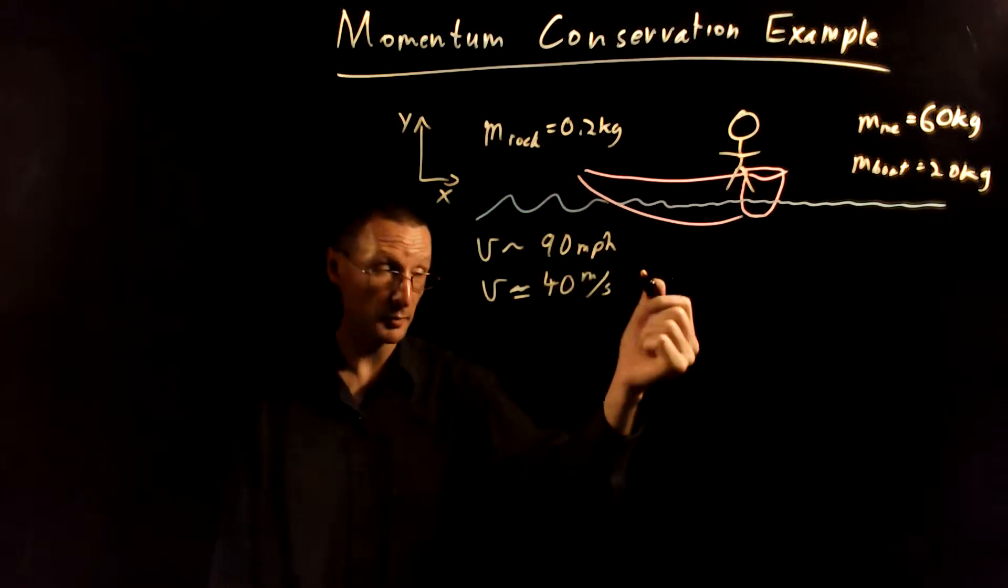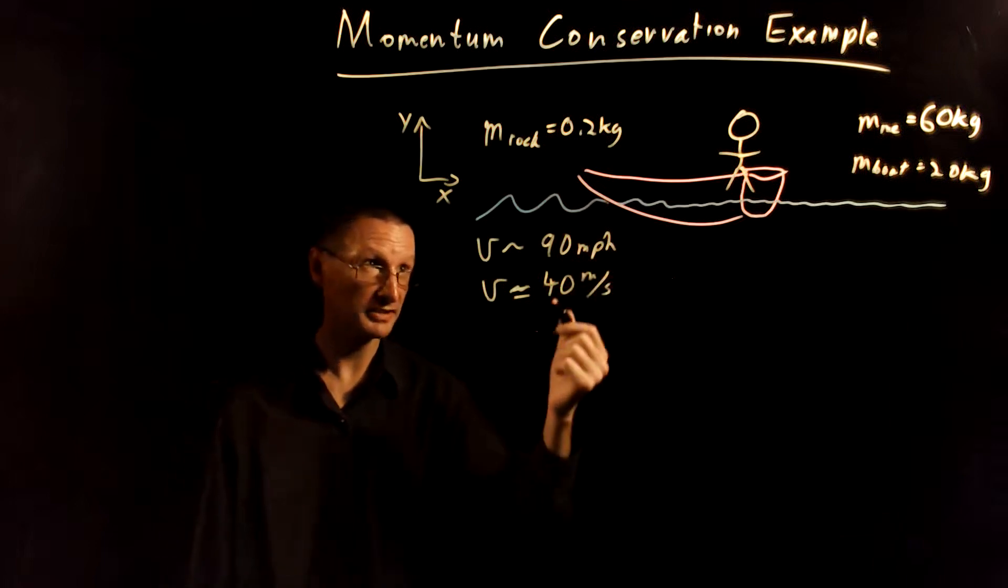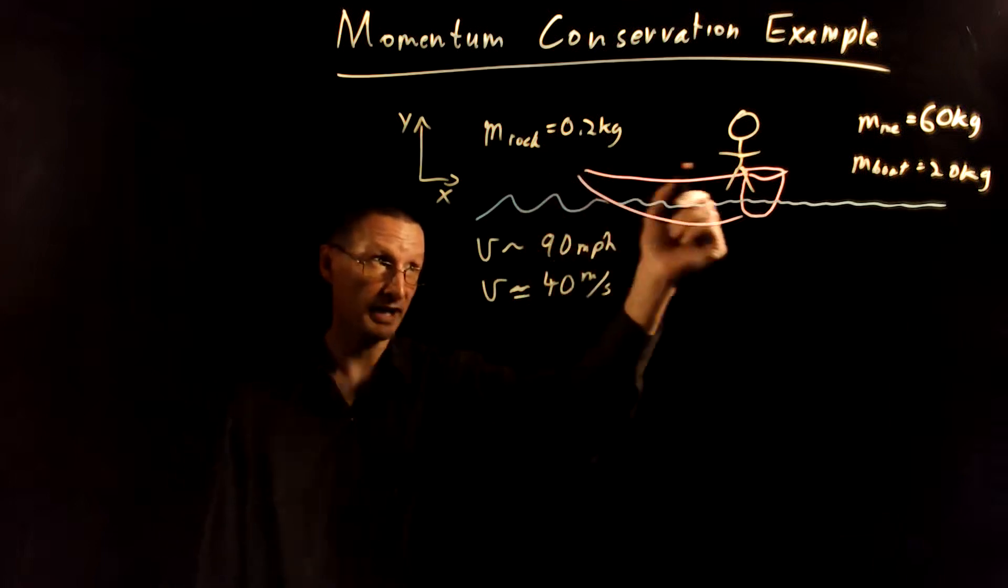So we just need to write down the initial momentum and set that equal to the final momentum, and then we can solve for the velocity of our boat here.